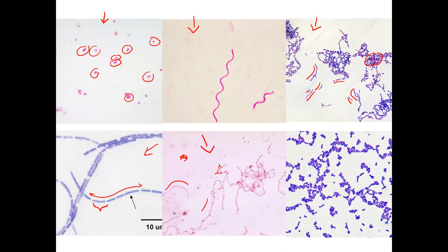The fifth image is pink — gram-negative — with cells in a strepto chain formation. Looking closely, the cells are elongated rather than round, making these bacillus-shaped cells. So this is another example of streptobacillus, except gram-negative, meaning it has a thin peptidoglycan layer and an extra outer membrane. The last image is purple — gram-positive — with round, coccus-shaped cells. The majority are in clumps, making this staphylococcus, gram-positive.